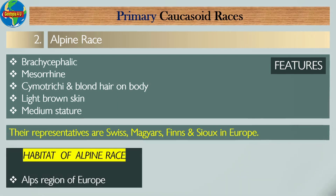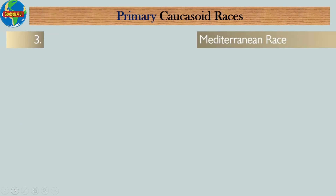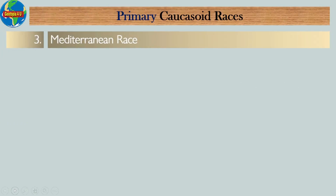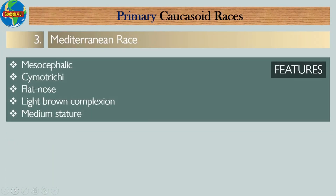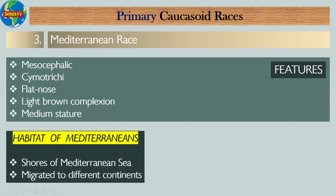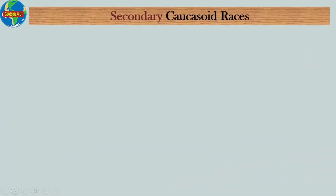Number three: Mediterranean race. The features of the Mediterranean race include: they are mesocephalic; they have cymotrichous hair; they are flat-nosed; they have a light brown complexion; and they are of medium stature. The habitat of the Mediterraneans includes the shores of the Mediterranean Sea, and they have migrated to several different continents.